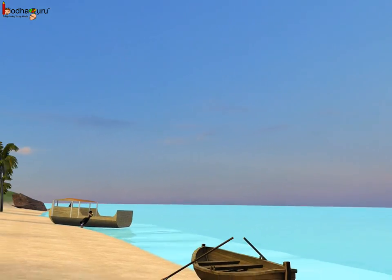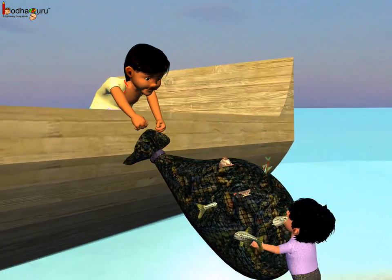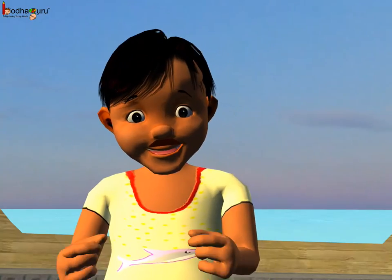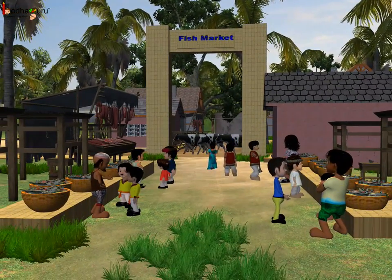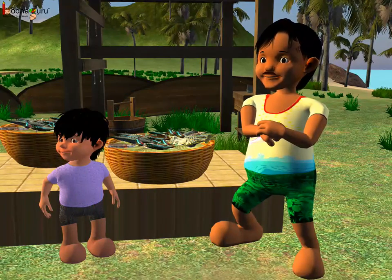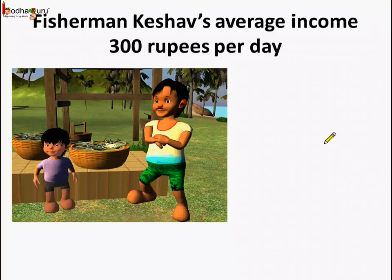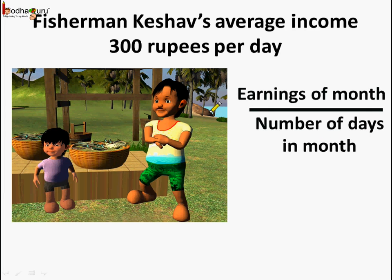Now, as we saw in the story, the fisherman Keshav's average income was 300 rupees per day. What did that mean? Does it mean he earned exactly 300 rupees per day? No. Sometimes he might have earned less than 300, like say 200 rupees per day, or at times he might have earned 400, which is more than 300 per day. If we consider the average income per month, we take the total earnings of the month and divide by the number of days in the month — and this way he earned an average of 300 rupees per day.